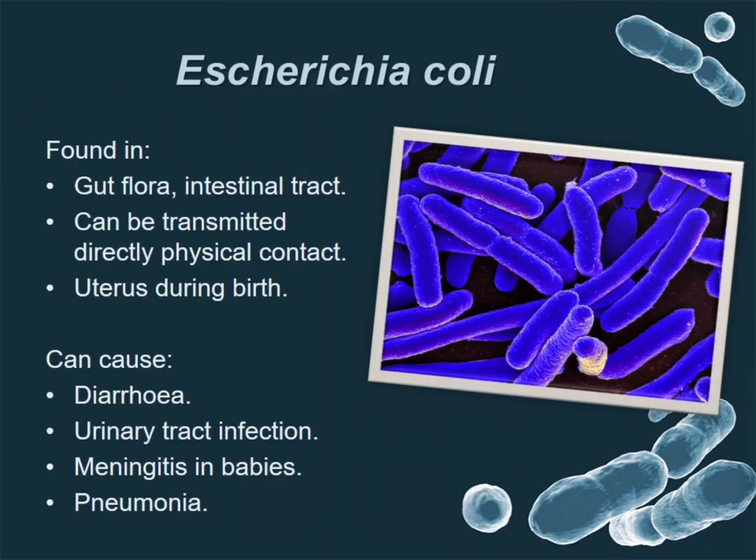Escherichia coli — they are the most abundant type of bacteria. We can easily find them inside the intestinal tract, and they can be transmitted from person to person with direct physical contact.